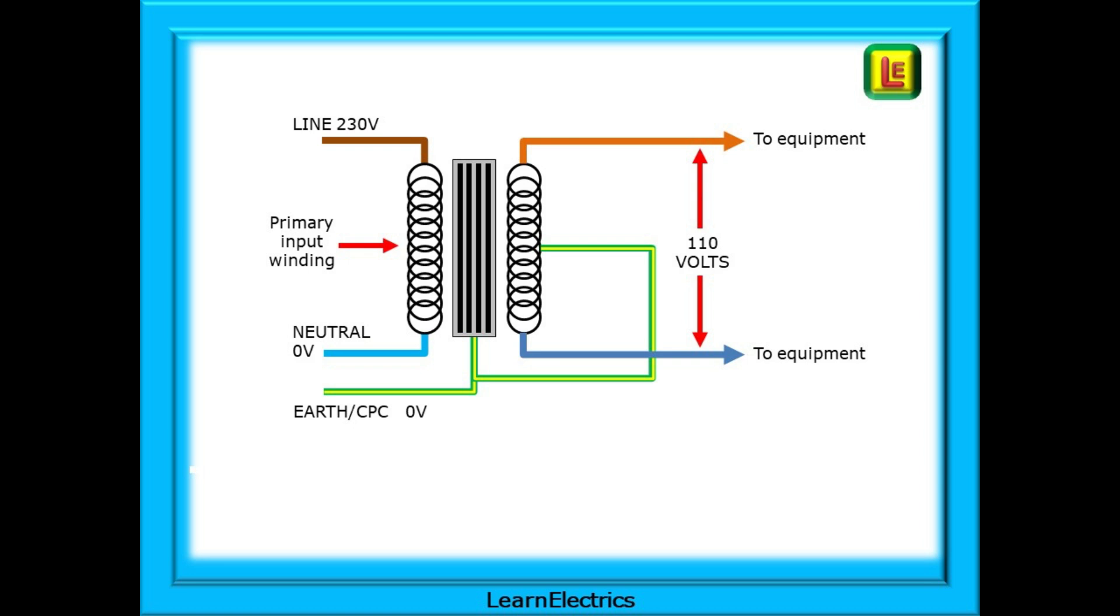And as this is a step down transformer, 230 volts input gives us 110 volts output to energize the power tools. Put very simply, the electrical input is changed into magnetism and then the magnetism is changed back into an electrical output. As you would expect, there are a lot of energy losses in this type of system, which is why the transformer becomes quite warm in use.